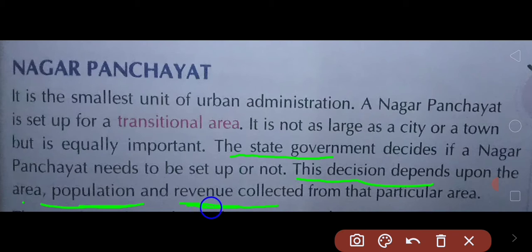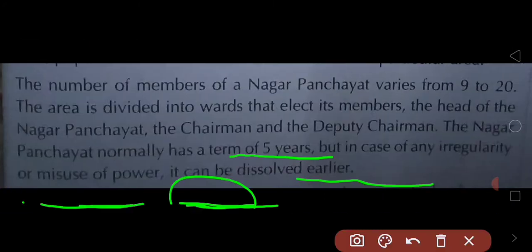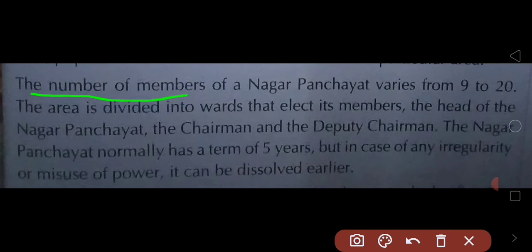Revenue means the income of the government — the tax collections and income that we call revenue. Now, the number of members of the Nagar Panchayat varies from 9 to 20, with a minimum of 9 and a maximum of 20. The area is divided into wards to elect its members.